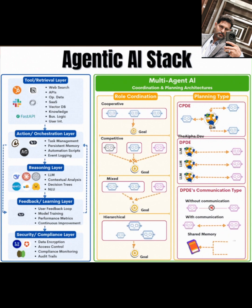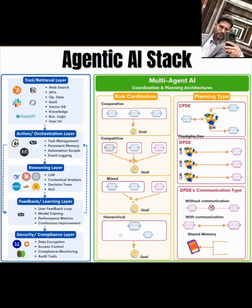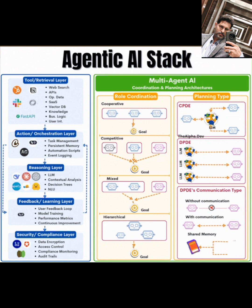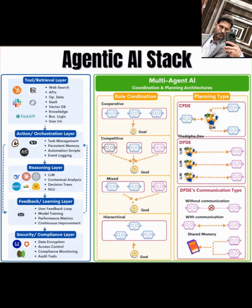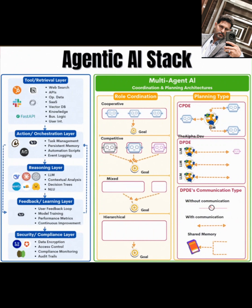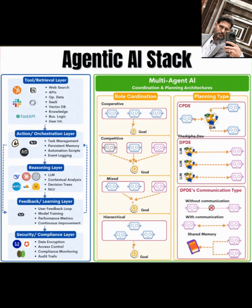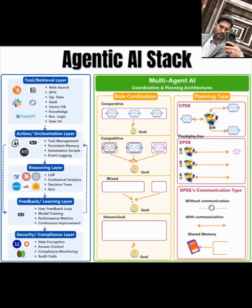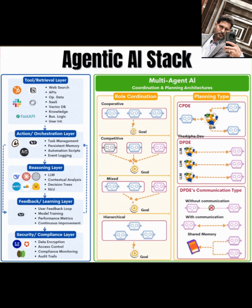Moving on to the feedback/learning layer, this is where your system gets smarter over time. Incorporate a user feedback loop to capture insights from interactions. Model training is key here — use performance metrics to evaluate your agents' effectiveness and identify areas for improvement. Continuous improvement ensures your system adapts and refines its behavior, making it more efficient with each iteration.